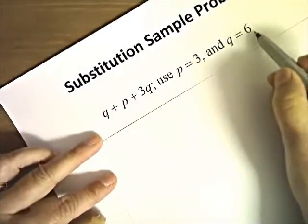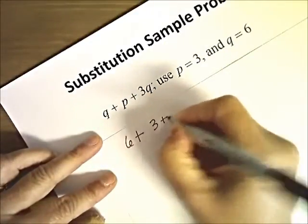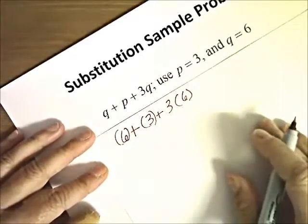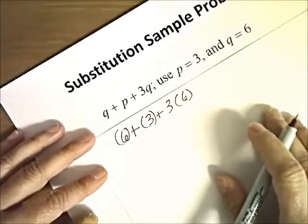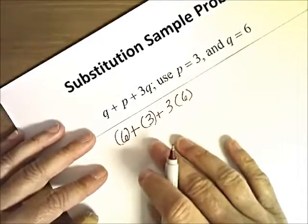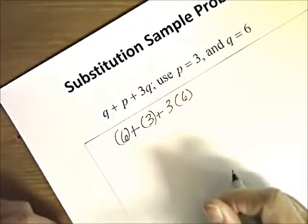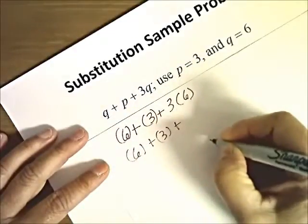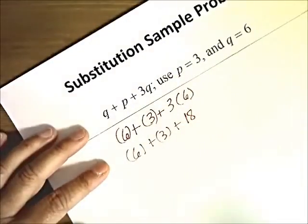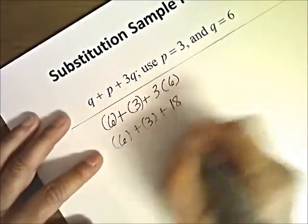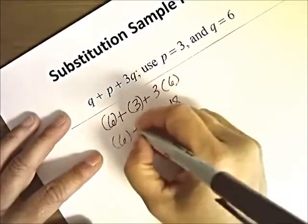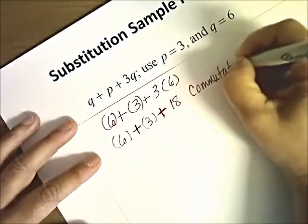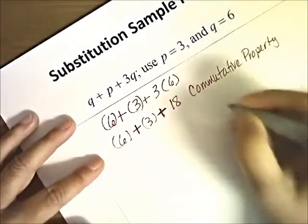We have q, and where the q is, we're going to put a 6, so we have 6 plus 3 plus, and I'm going to put these in parentheses because Mr. Lamy had that on there, and then 3 times 6. So what are we going to do first? If we go back to our order of operations — please excuse my dear Aunt Sally — parentheses, exponents, multiply and divide from left to right. We have parentheses but there's just single numbers there, so we don't really have anything inside parentheses to work together. We have a multiplication: 3 times 6 is 18.